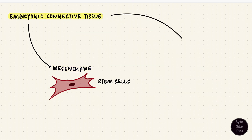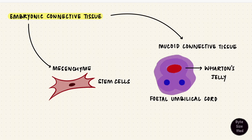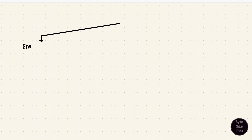The other type of embryonic connective tissue is called the mucoid or mucus connective tissue. This is located in the fetal umbilical cord around the umbilical vessels, and it's commonly known as Wharton's jelly. Mesenchyme and the mucoid connective tissue are embryonic connective tissue — that's the first type of connective tissue.